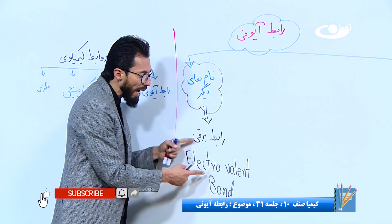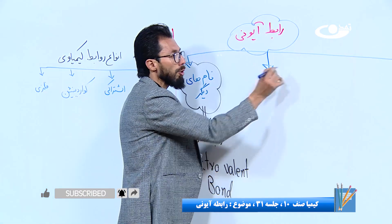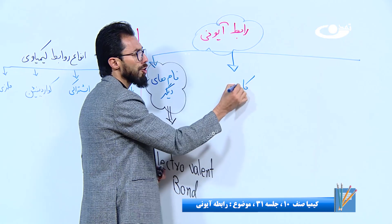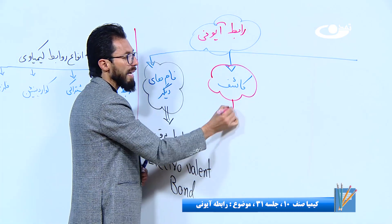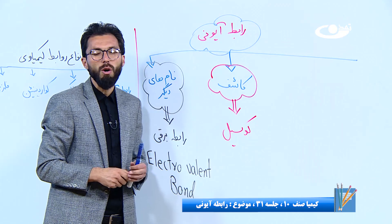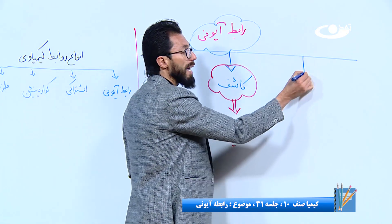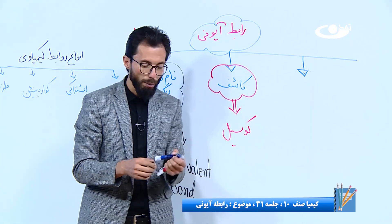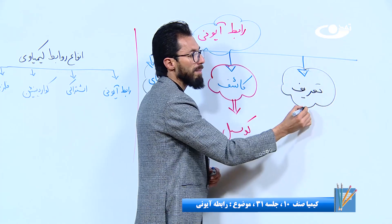موضوع اول نام‌های دیگر رابطه آیونی بود. موضوع دومی که باید در قسمت رابطه آیونی داشته باشی کاشفش است. کسی که برای بار اول این مطلب را بیان کرده کسیل (Kossel) بود که گفت رابطه‌ها بر اساس برد و باخت الکترون به وجود می‌آید.